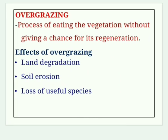Overgrazing: deserts and grasslands are used by livestock for grazing, and a huge population of livestock needs more grazing land. The process of eating vegetation without giving any chance for its regeneration is called overgrazing — when animals graze the same land again and again with no chance of recovery.